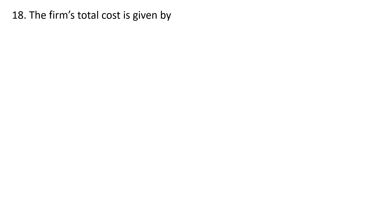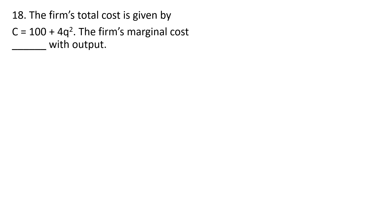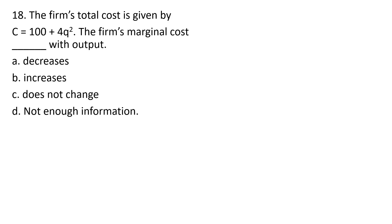Question 18. The firm's total cost is given by the following equation. The firm's marginal cost blank with output. The correct answer is B — the firm's marginal cost increases with output. If you were to graph this cost equation, it would be increasing at an increasing rate, so the slope would be getting steeper as we produce more output. Marginal cost would be increasing with output.